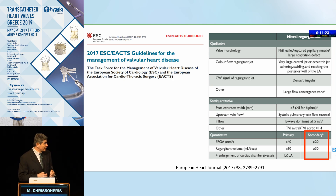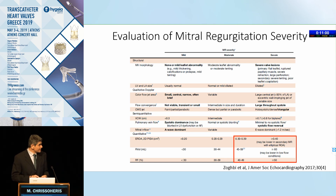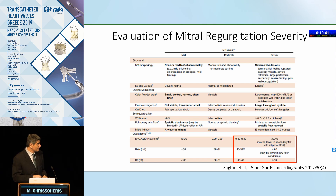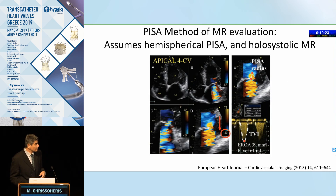Moving on to assessing severity of mitral regurgitation: the European guidelines from 2017 defined severe primary MR as EROA over 40 with a regurgitant volume over 60, and for secondary or functional MR the ERO level is at 20 mm² and the regurgitant volume at 30. From the US side, the guidelines have kept the severity index for both degenerative and functional MR at an EROA of 40, with a regurgitant volume of 60 and a regurgitant fraction over 50%. This makes the criteria more specific but may lose sensitivity for functional MR patients who don't meet those cutoff points.